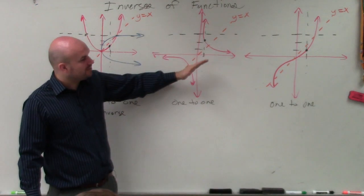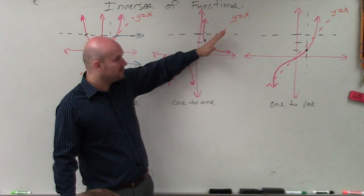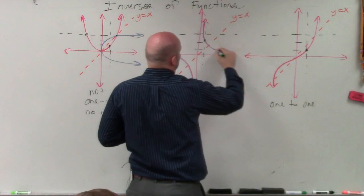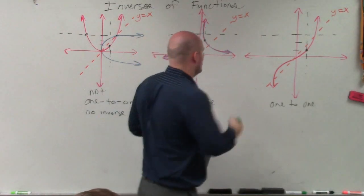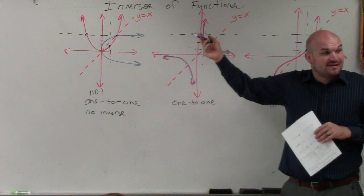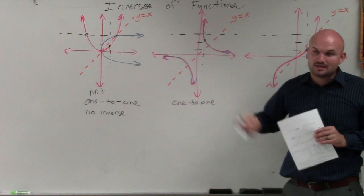Over in this example, this graph is actually reflective about itself. So when I go ahead and reflect about the y equals x, this graph and its inverse is exactly the same. It's an inverse of itself, which is kind of cool.